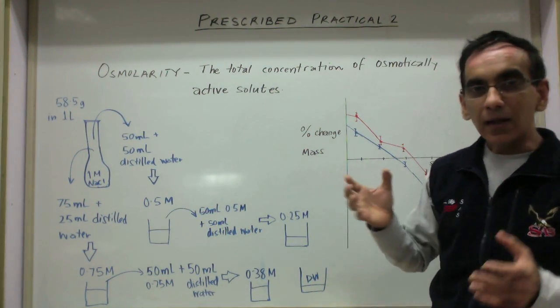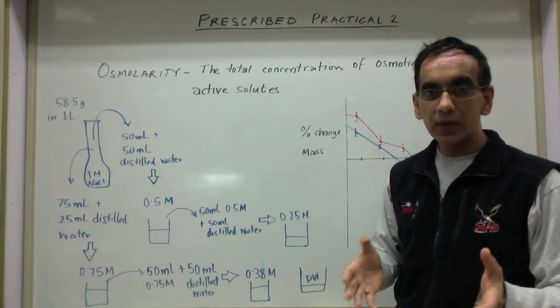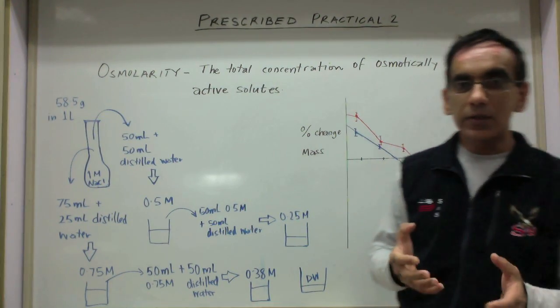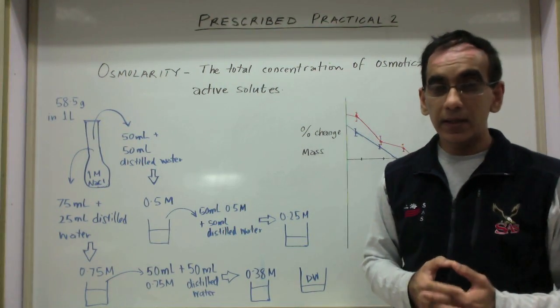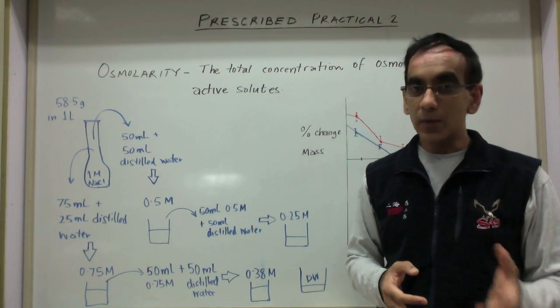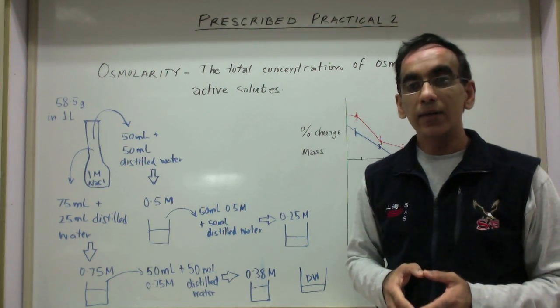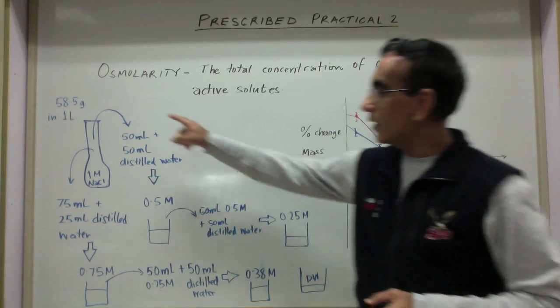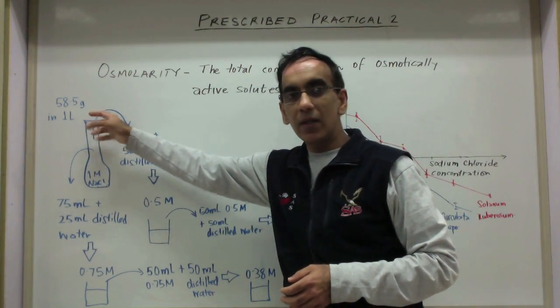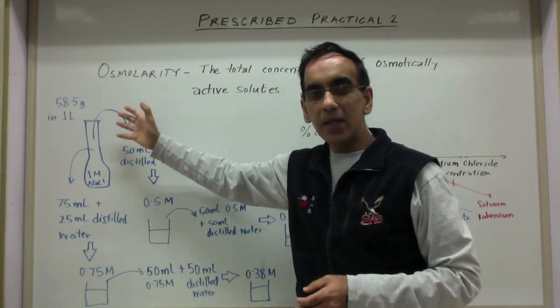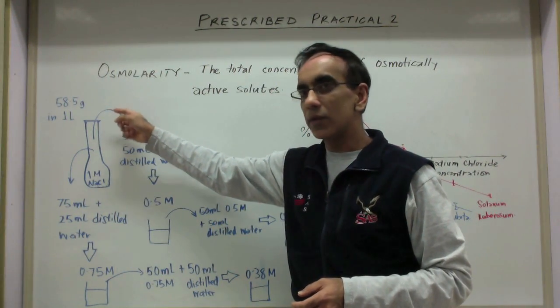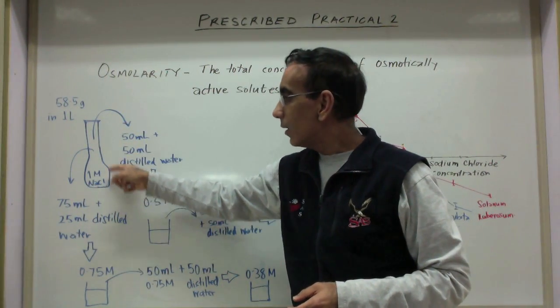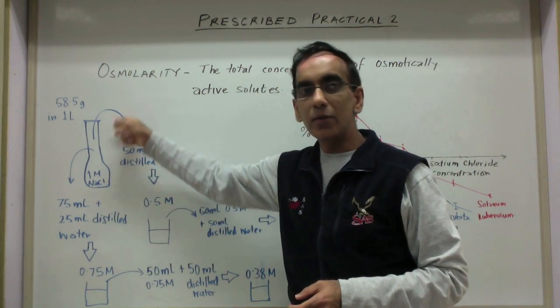To make a one molar solution of sodium chloride we must first determine the molecular mass or the molar mass of sodium chloride, Na which is 23 and chloride 35.5. Together they come to 58.5. An easy way to make a one molar solution is to dissolve 58.5 grams of sodium chloride in a one liter volumetric flask.